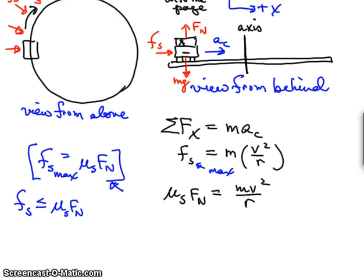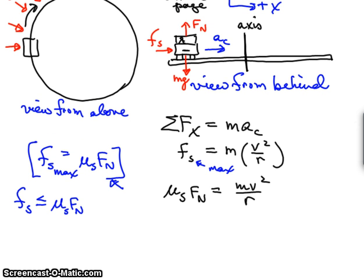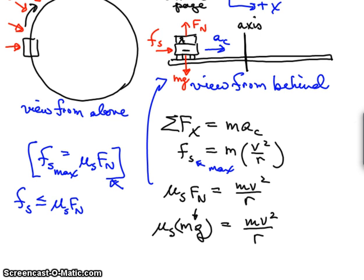But we don't really want the normal force. We want the values in terms of mass and gravity. If you look at the diagram up here, you'll see that the normal force should be equal to mg. So we have mu sub s times mass times gravity, replacing the F sub n, equals m v squared over r.